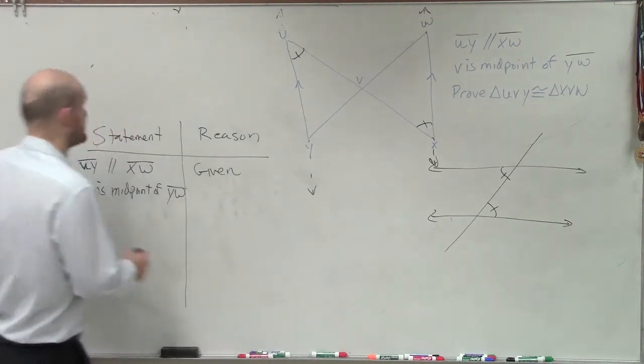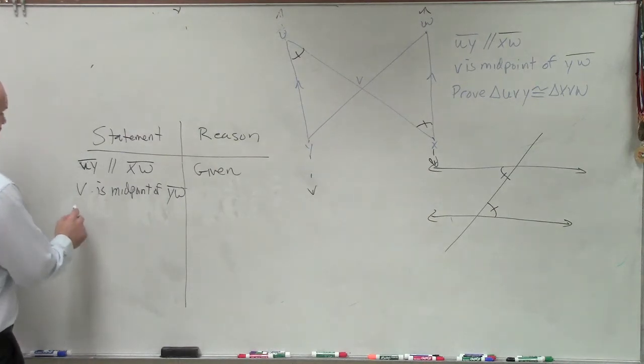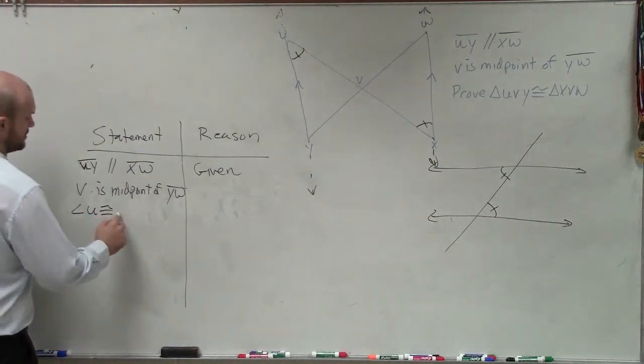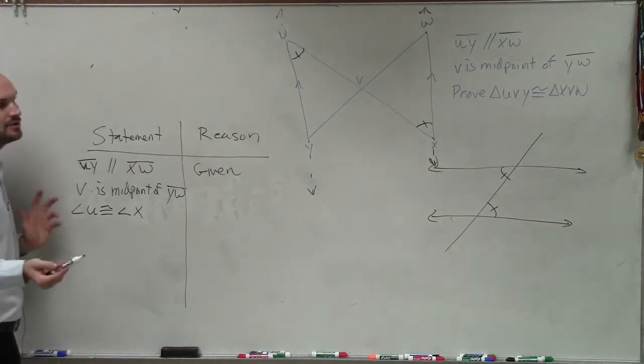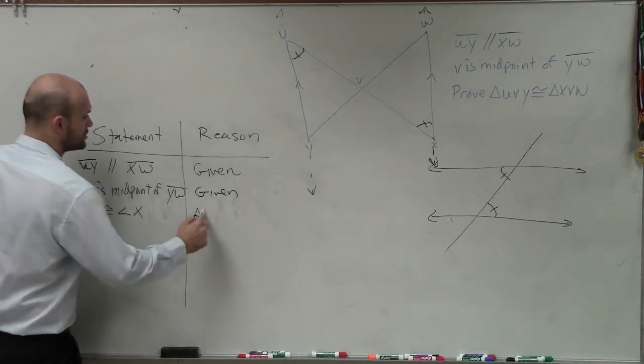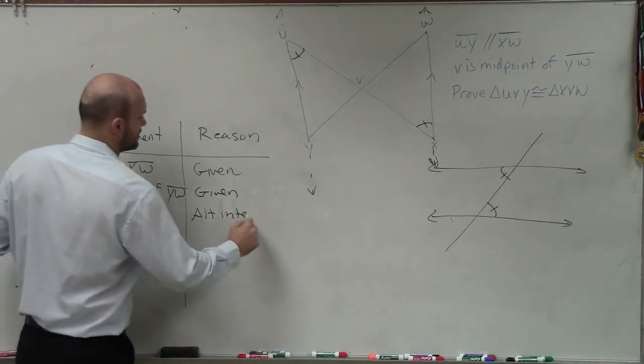OK. So therefore I can write angle U is congruent to angle X. Why do I know those are congruent? Because, that's a given, because they're alternate interior angles.